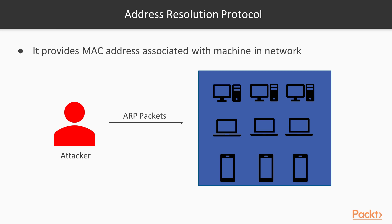ARP provides the MAC address of a machine in the network. If you have the IP address of a machine and want to get its MAC address, you can use ARP packets to get that information. An attacker can also take advantage of these packets — you can see in the figure that the attacker is sending ARP packets in the network to get information about MAC addresses.